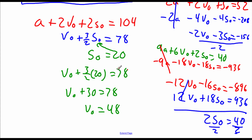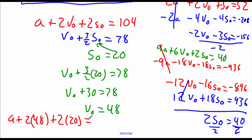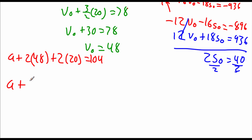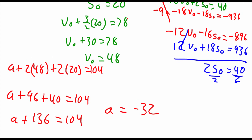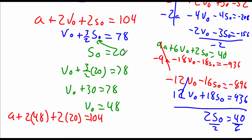The last thing we need to do is figure out our a value. We'll plug in v-sub-0 equals 48 and s-sub-0 equals 20 into the top red equation: a plus 2 times 48 plus 2 times 20 equals 104. Simplifying, a plus 96 plus 40 equals 104, so a plus 136 equals 104. Subtracting 136, we get a equals negative 32. So our acceleration is negative 32 feet per second squared, our initial velocity is 48 feet per second, and our starting height s-sub-0 was 20 feet.